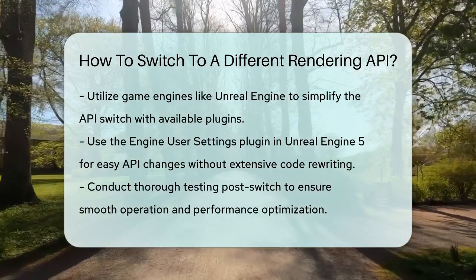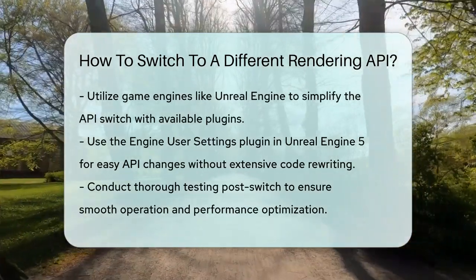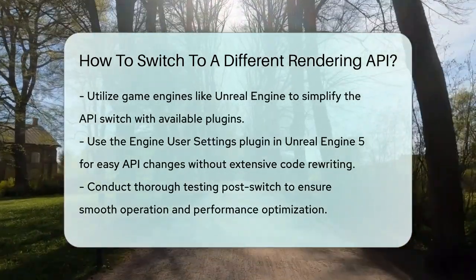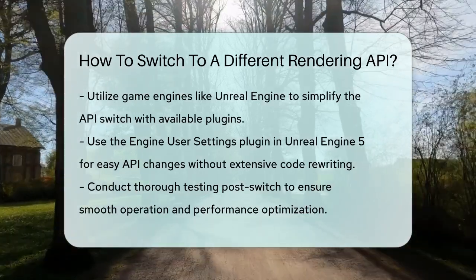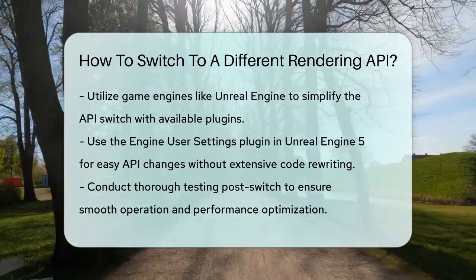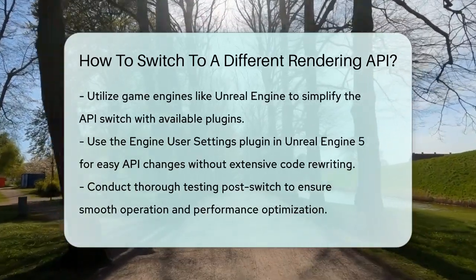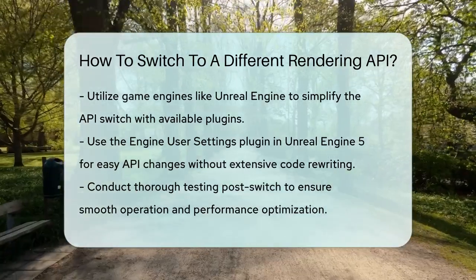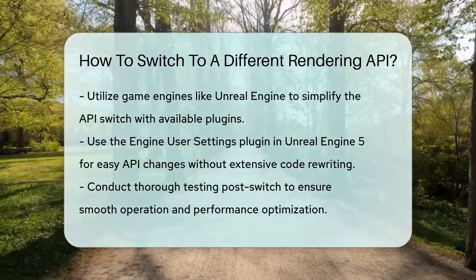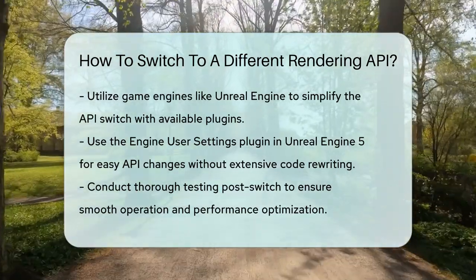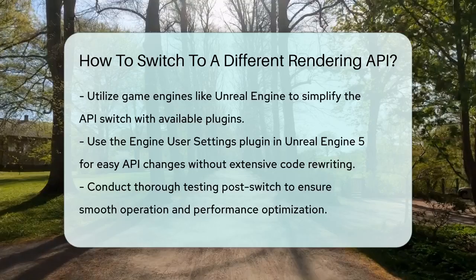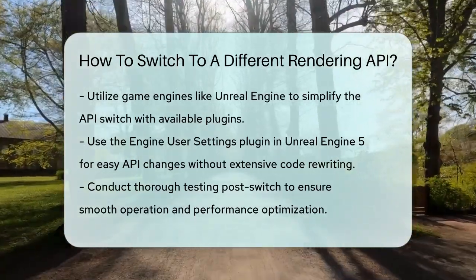Finally, testing is crucial. Once you've made the switch, you need to ensure that your application runs smoothly and performs well. This involves checking for bugs, optimizing performance, and making sure all the features you need are working as expected. Switching to a different rendering API is a bit of a journey, but with the right steps, you can make it happen and improve your application's performance and features significantly.